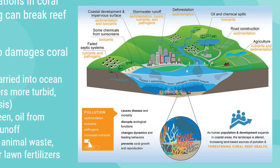Toxicants are chemicals synthesized by humans — distinct from toxins, which are produced by biological organisms. Lead, for example, is a neurotoxicant, not a toxin. Toxicants include sunscreen from beachgoers, oil from roadways, and pesticides from agricultural runoff. These can be directly toxic or lethal to organisms in coral reef ecosystems, killing fish and algae.